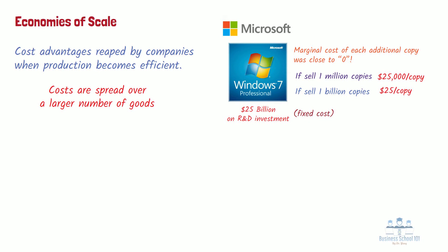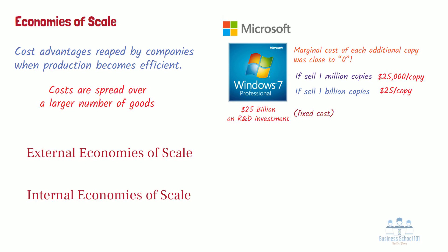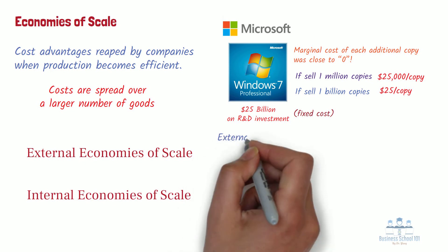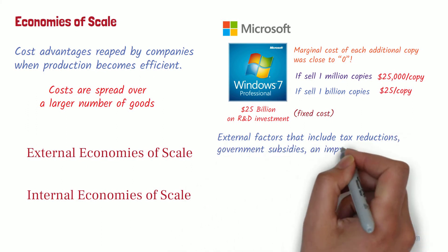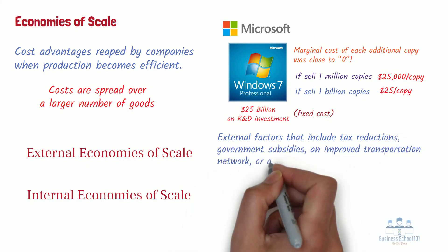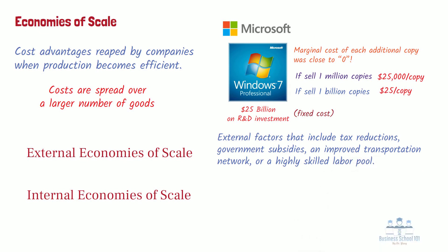Generally, there are two main types of economies of scale: external and internal. External economies of scale are dependent on external factors that include tax reductions, government subsidies, an improved transportation network, or a highly skilled labor pool. In contrast, internal economies of scale are controlled by the company's internal factors and can be further categorized into technical economies of scale, purchasing economies of scale, and financial economies of scale.